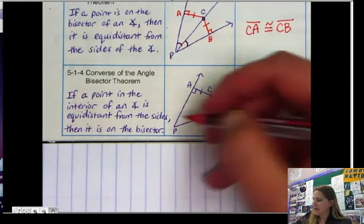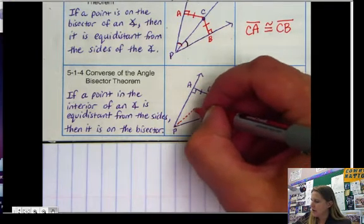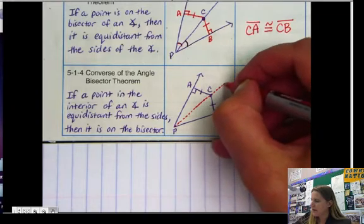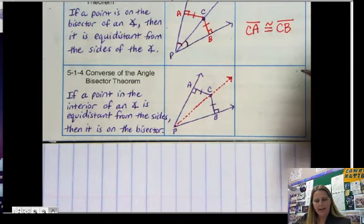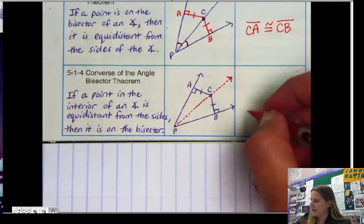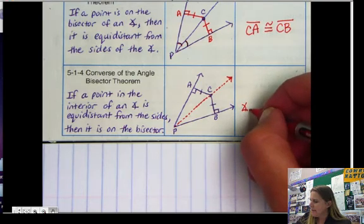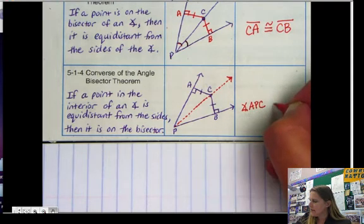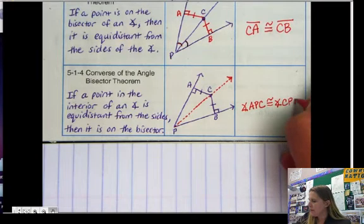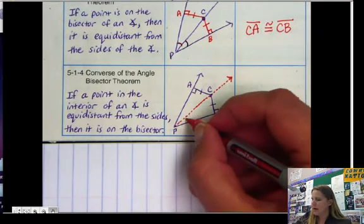Then it is on the bisector. So I could draw an angle or a line here and have that, and I could say then that angle APC is congruent to angle CPB. So these two are congruent here.